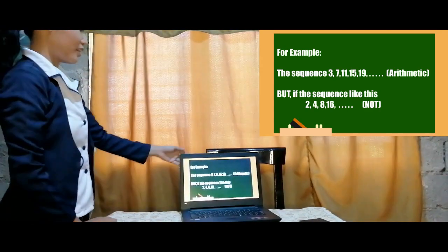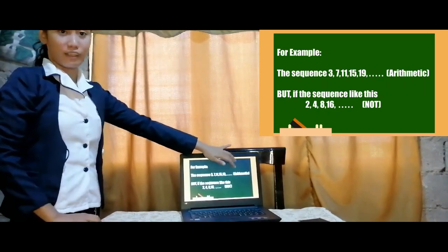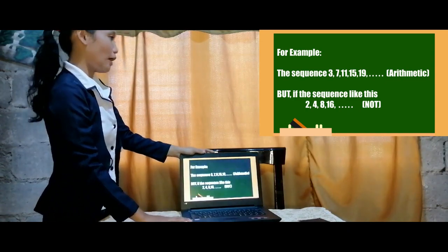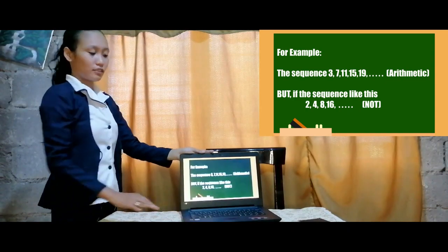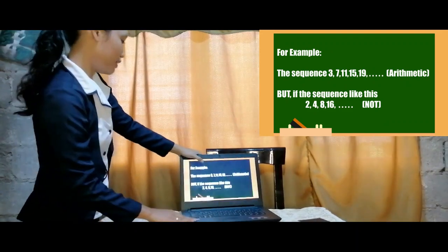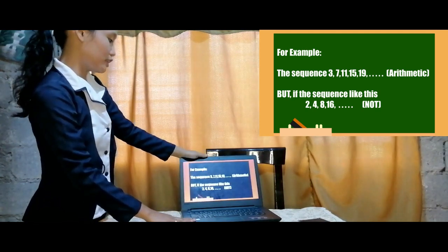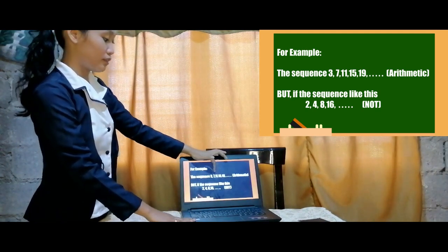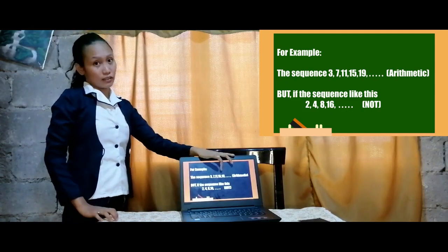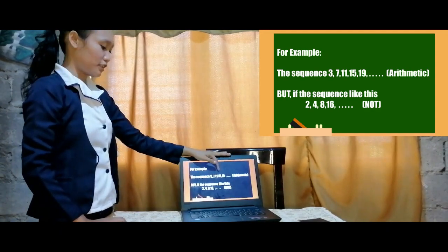For example, the sequence 3, 7, 11, 15, and 19 is an example of arithmetic sequence. Why? Because the definition said that arithmetic sequence has a common difference. If you look at this sequence, we will just subtract: 7 minus 3 is 4, 15 minus 11 is 4 also. The common difference is constant, which is 4. So we can say that this sequence is an arithmetic sequence.